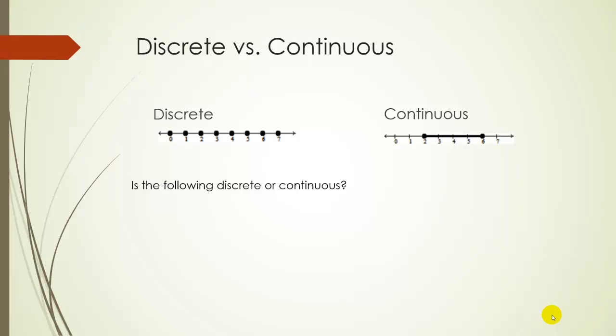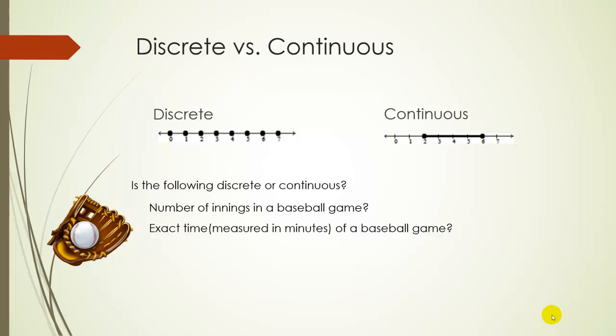So let's try to identify if the following is discrete or continuous. So the number of innings in a baseball game, would that be discrete or continuous? Exact time, measured in minutes of a baseball game, grade on a test, a person's exact height, let's go through each of these.